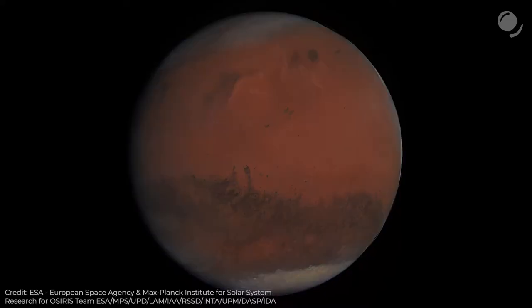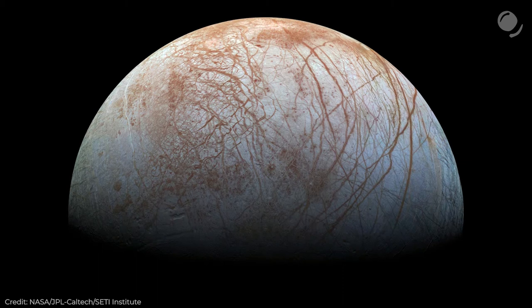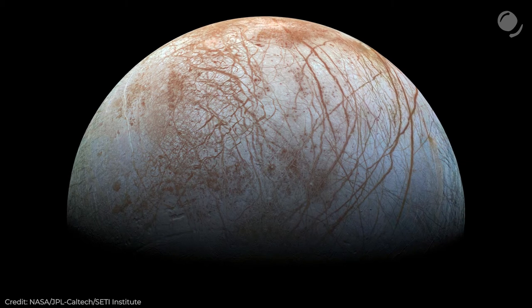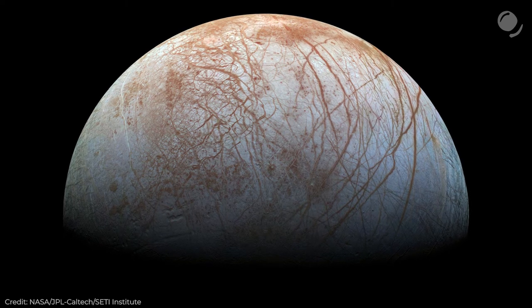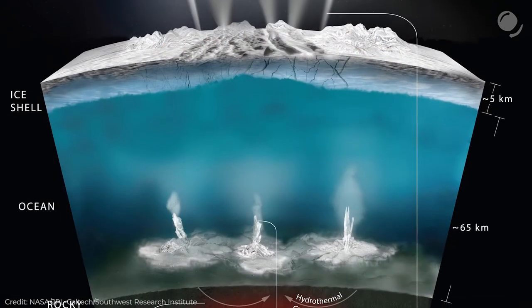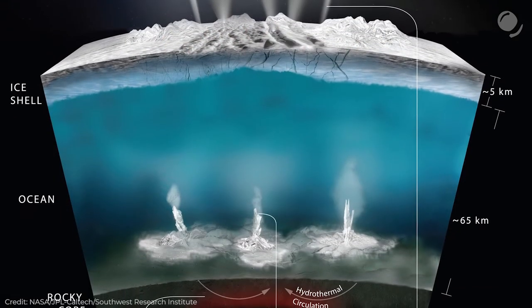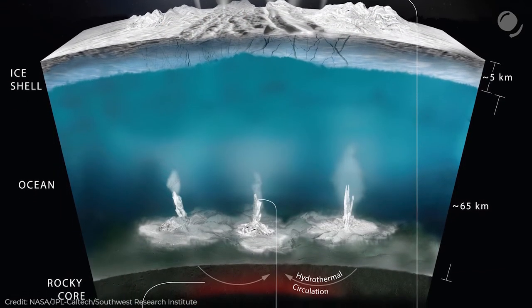When we think about extraterrestrial life, we mean life as we know it — because we have only one example that we really understand: carbon-based life that needs liquid water. So when we search for a planet or some other body that could be habitable, we look for components necessary for life as we know it — liquid water, certain conditions, a source of energy, and specific chemistry.